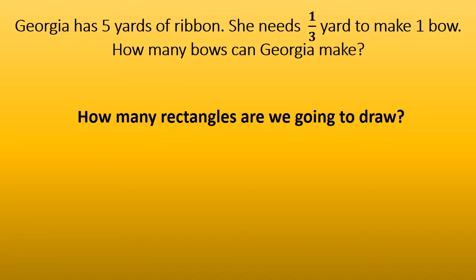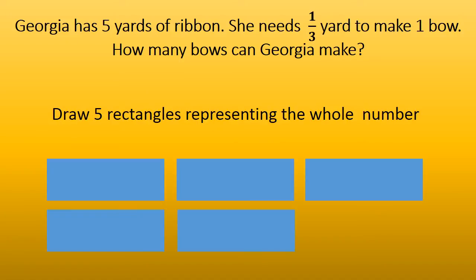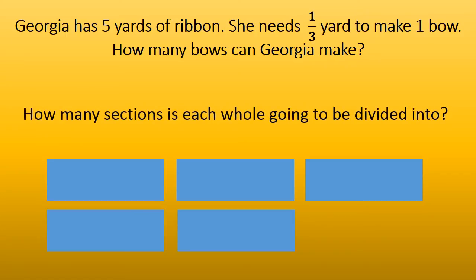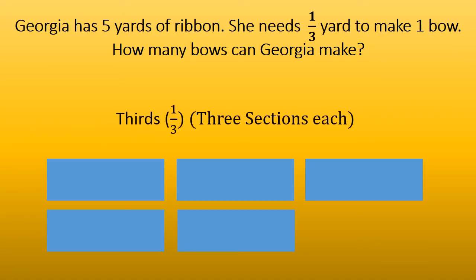Once again we are going to see how many rectangles we are going to draw. Since we have five yards of ribbon, we are going to represent the five yards with five rectangles. Now we are going to determine how many sections each whole is going to be divided into. This time she needs one third yard to make one bow, so we will be dividing each of the whole numbers into thirds — three sections each.